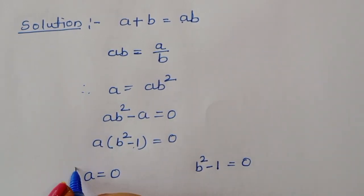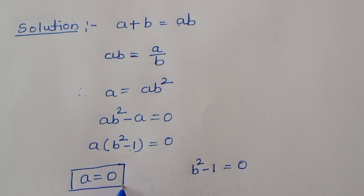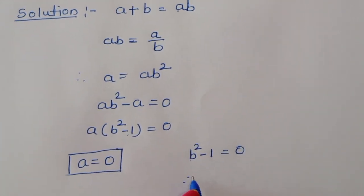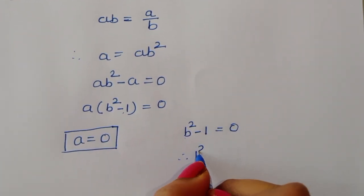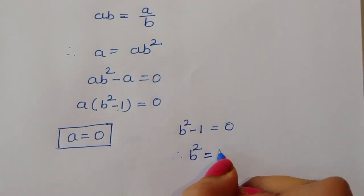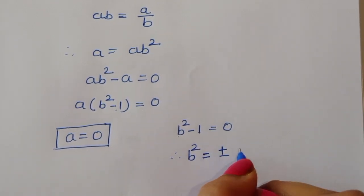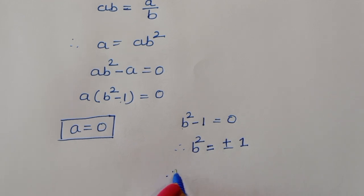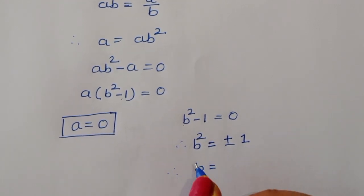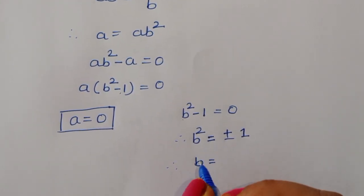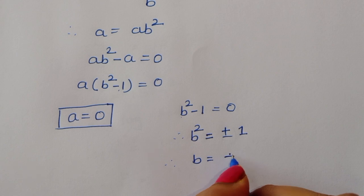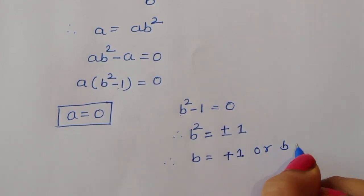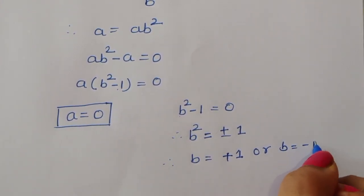From b² - 1 = 0, we get b² = 1. Therefore b = +1 or b = -1.